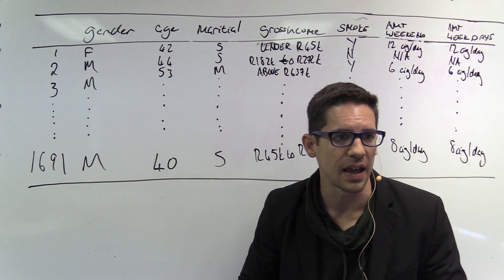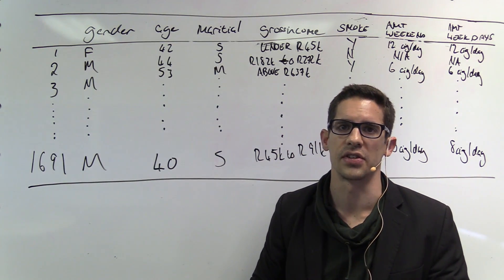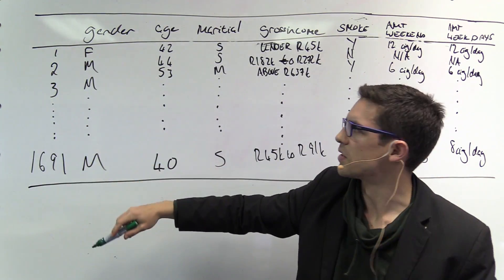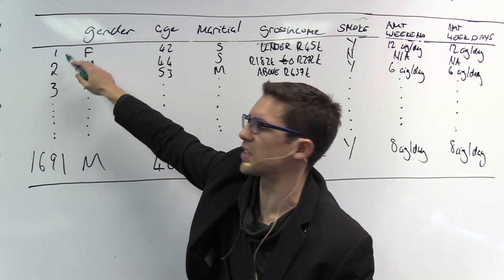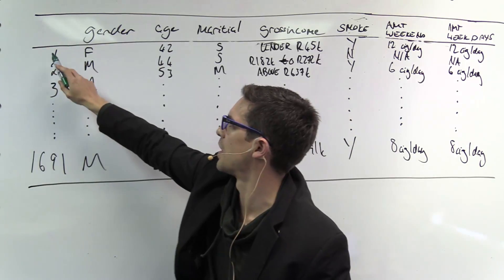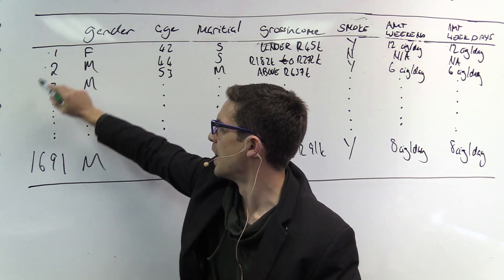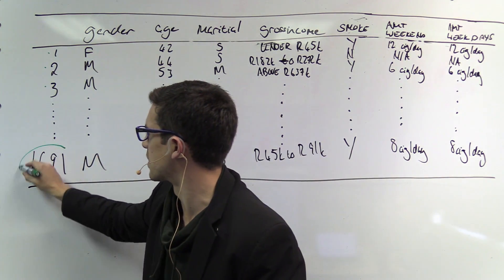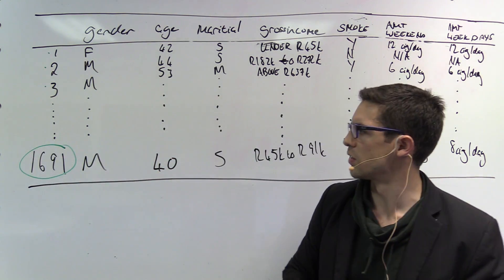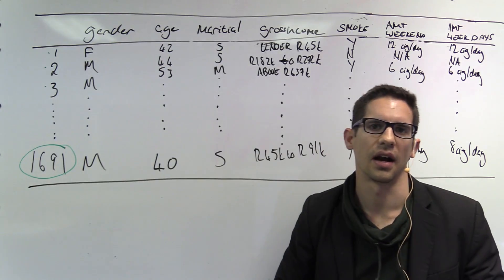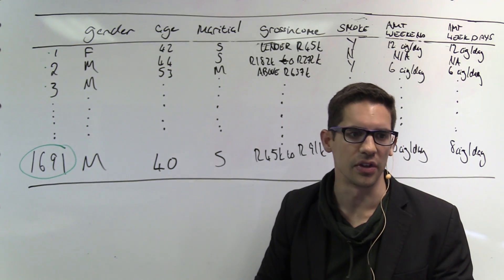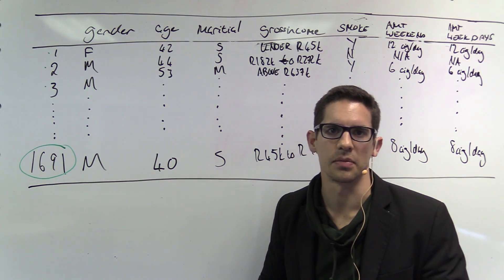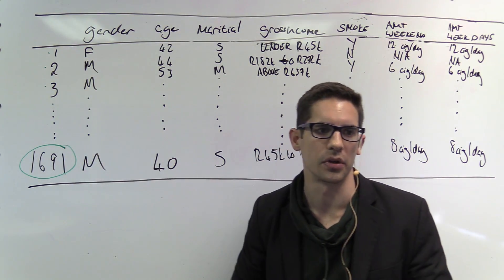The second question asks how many participants were included in the survey. We just look at the first column — each respondent was given an incrementing number, starting from one and carrying on until 1691. So the answer is: there were a total of 1691 respondents in the survey, which is also our total number of cases.